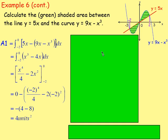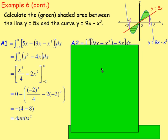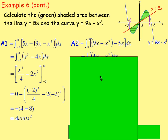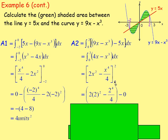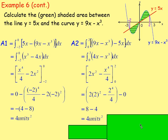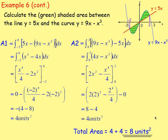For the second area (between 0 and 2), the curve 9x minus x cubed is on top, so the integrand is 9x minus x cubed minus 5x, which simplifies to 4x minus x cubed. Integrating gives 2x squared minus x to the power of 4 over 4. Substituting limits 2 and 0 gives 8 minus 4 equals 4 squared units. The area below is 4 and the area above is also 4, so the total area is 8 squared units.